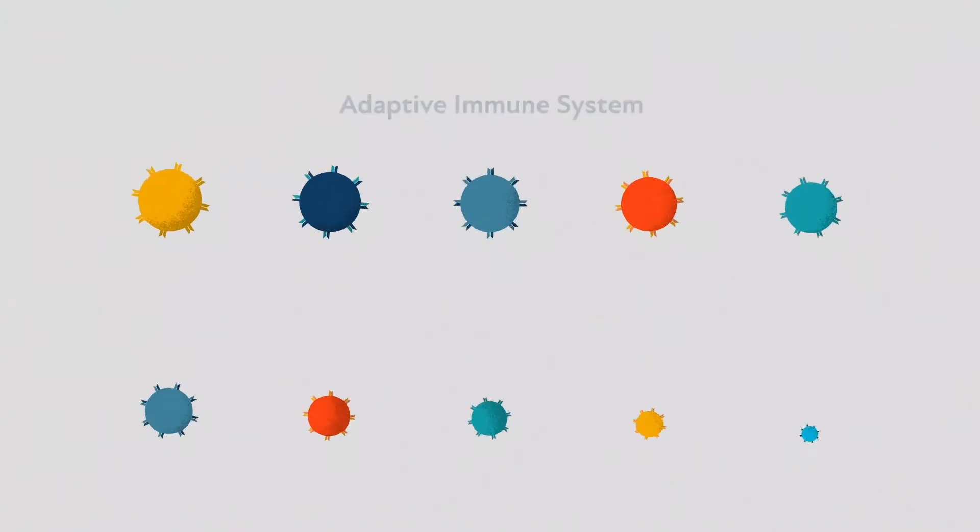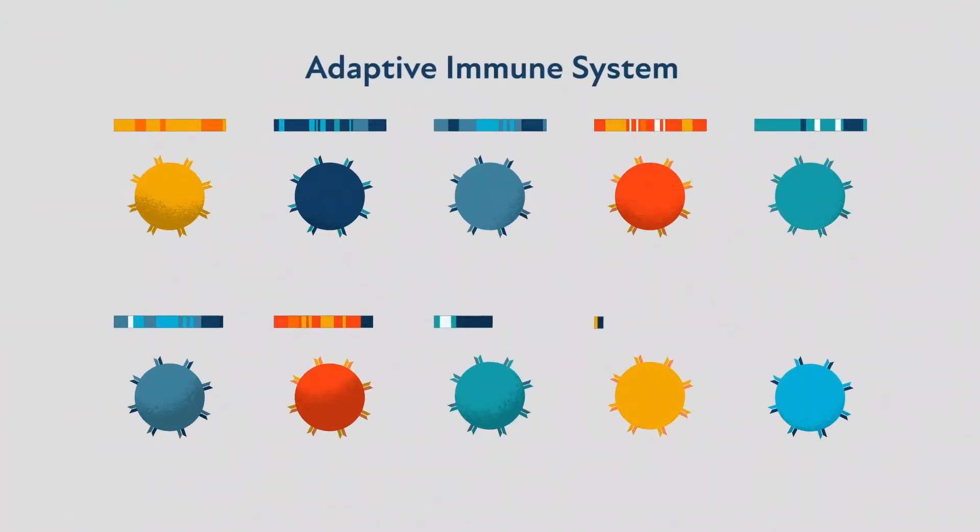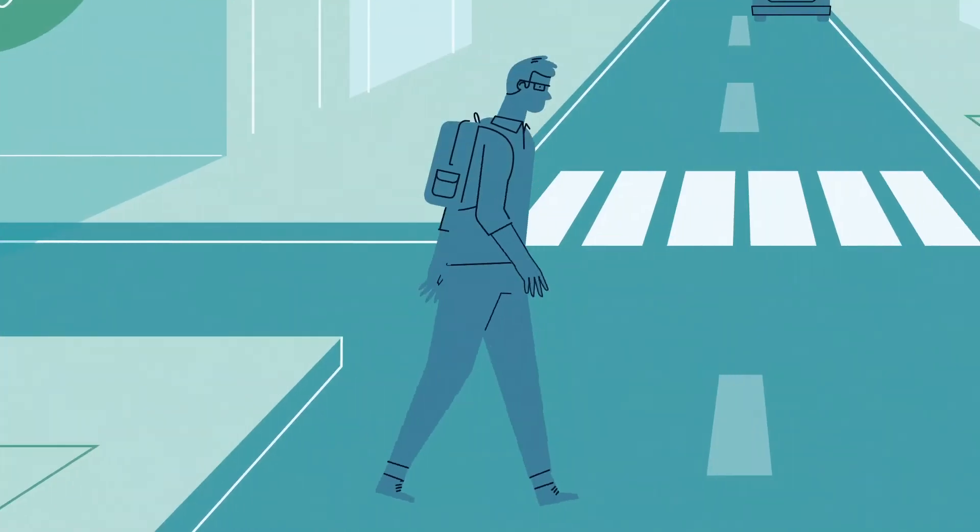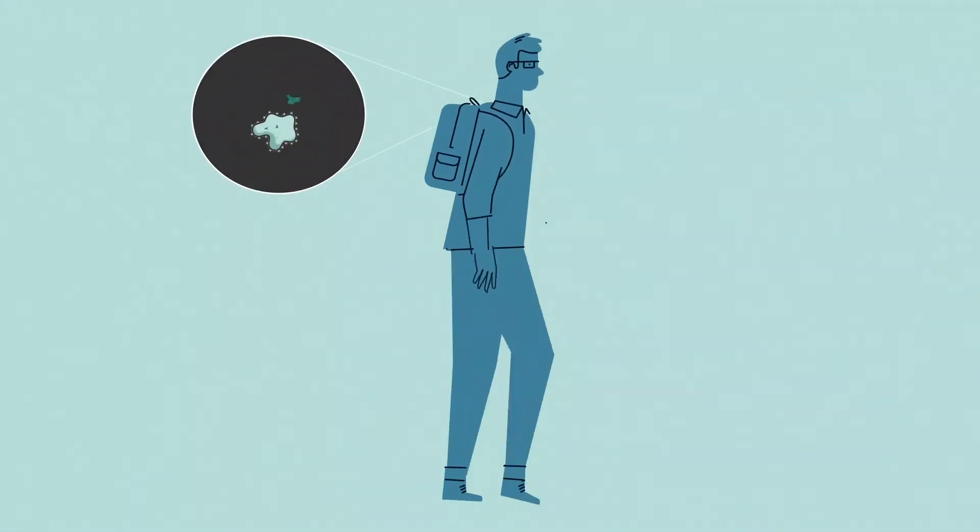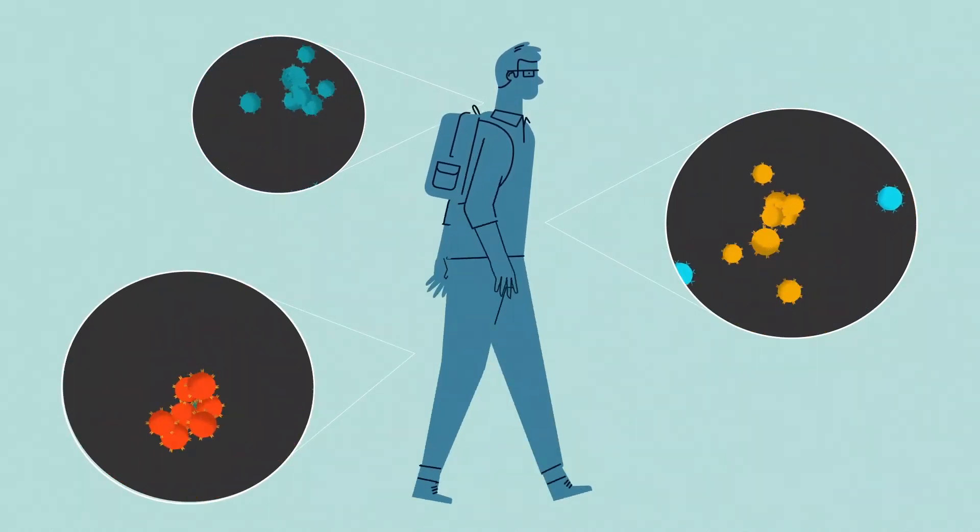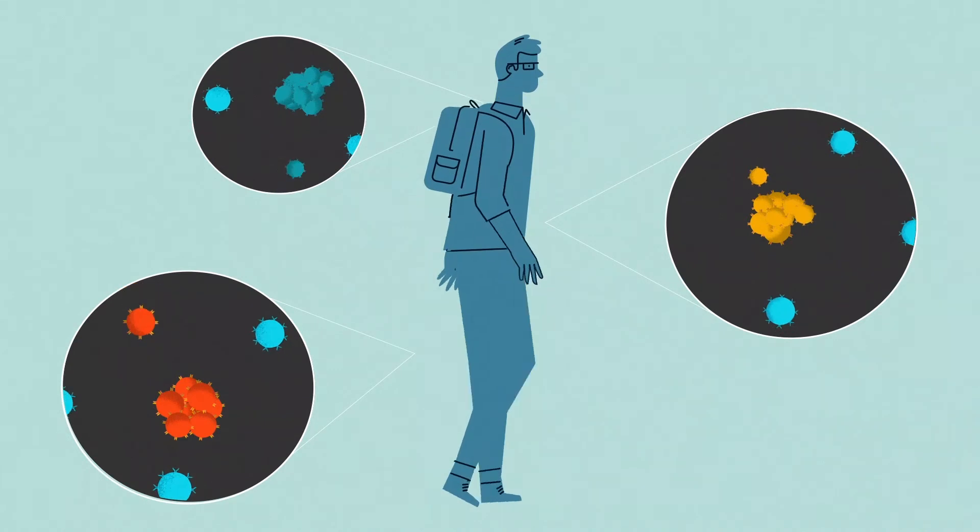If we could only read the genetic code of these T cells that initiate the immune response and know which diseases they target, we could use this information to change medicine by applying what our immune systems already know how to do. We could effectively read the unique story about every disease a person has ever encountered, from infectious and autoimmune diseases to cancer, and learn more about how to fight them.